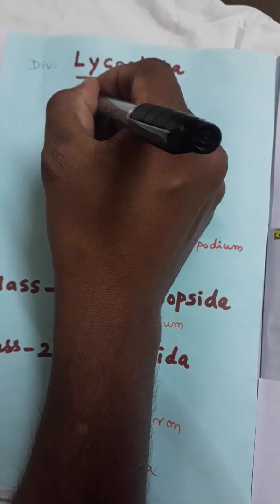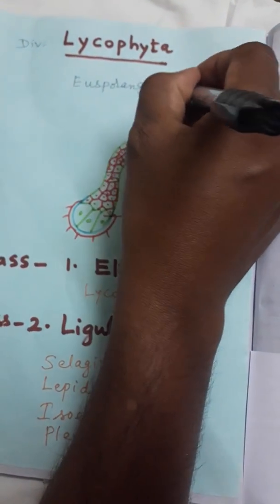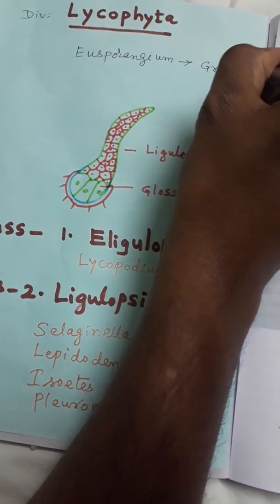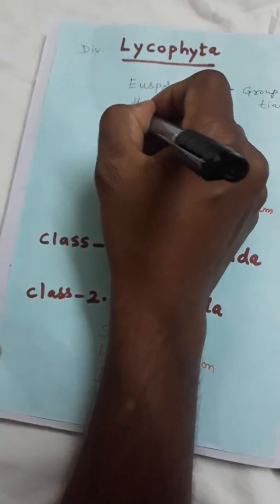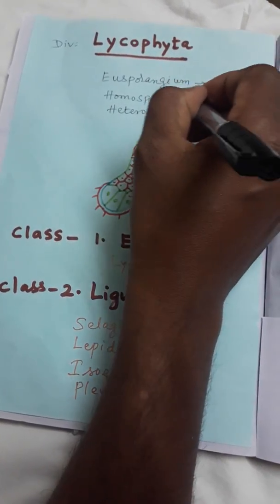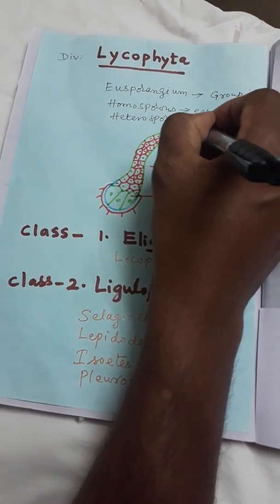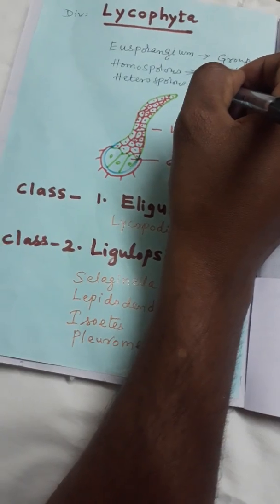One character is eusporangium, which means the entire sporangium originates from a group of initials — this is called eusporangium. Another one is homosporous, which means all the spores are equal in size. Heterosporous means two different sizes of spores are formed on the same plant.